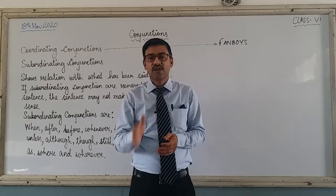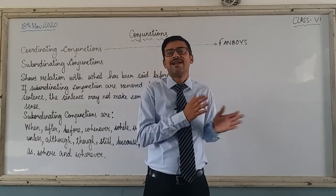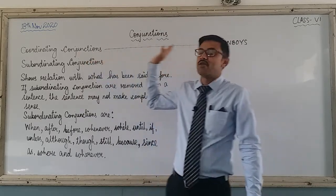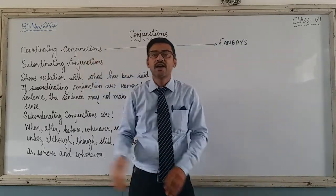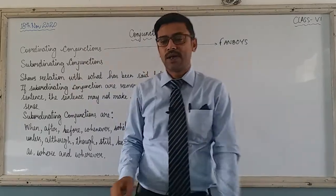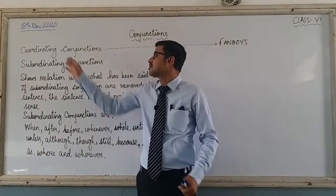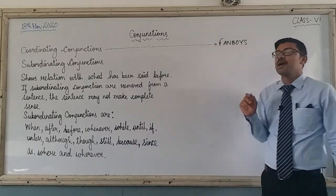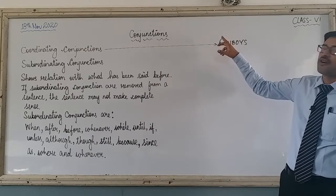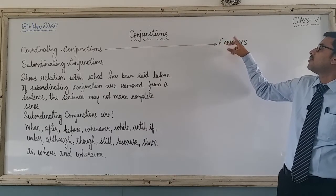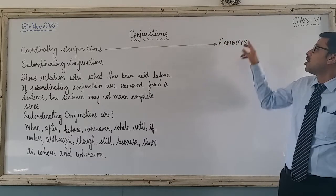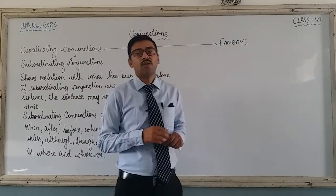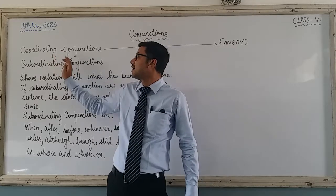In yesterday's chapter or yesterday's lesson, whether it was the video or in the live class, we briefly came to know about coordinating conjunctions. We learned that coordinating conjunctions can be remembered with the acronym FANBOYS, where F stands for 'for', A for 'and', N for 'nor', B for 'but', O for 'or', Y for 'yet', and S for 'so'. These are all coordinating conjunctions.